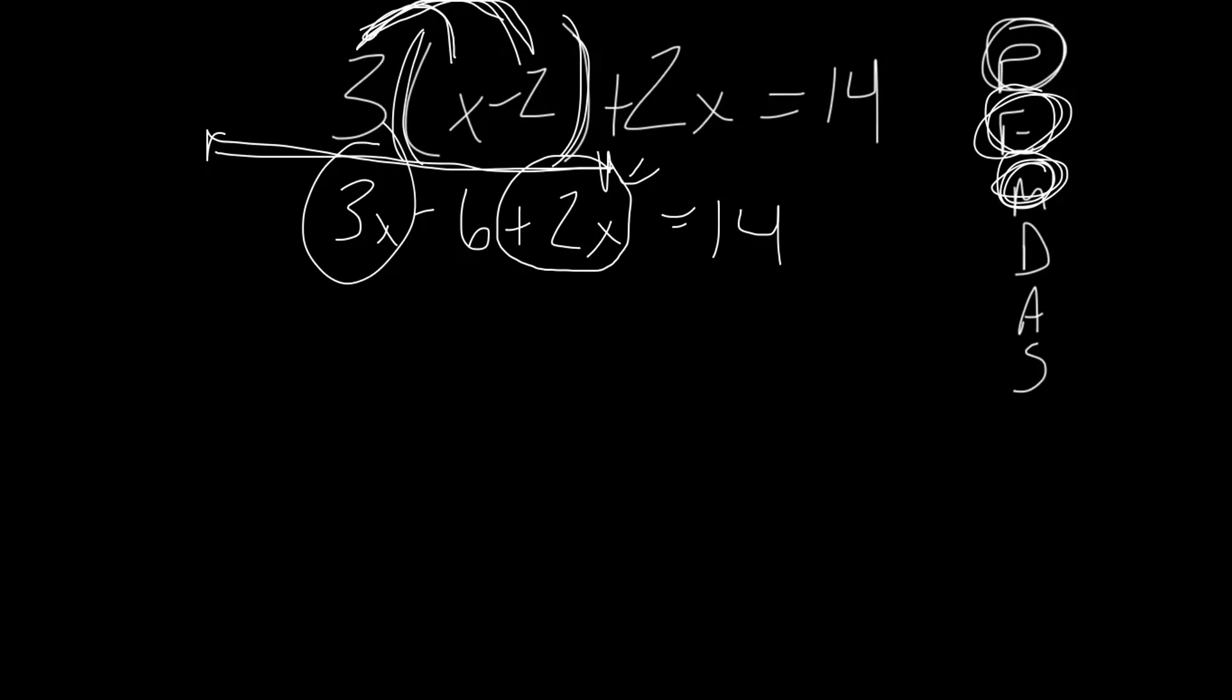Alright, so 3x plus 2x is 5x. Then we mark it out. That way we don't combine it again and we can see stuff we've left over. Only thing left over there is minus six equals 14.